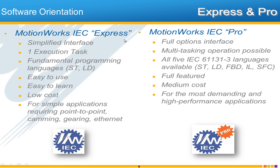The main limitation of Express is that it can only execute one task — we'll see what that means as we progress. With MotionWorks IEC Pro we have multitasking capability, which adds a performance advantage. Express also has the limitation of only two languages: structured text and ladder diagram. Function block code can be inserted in ladder diagram, but with MotionWorks IEC Pro we have full and official access to all five languages.